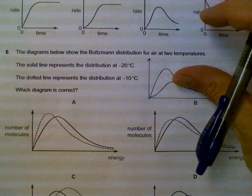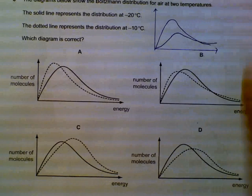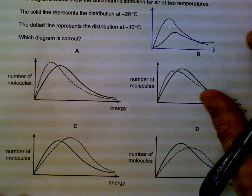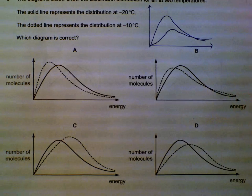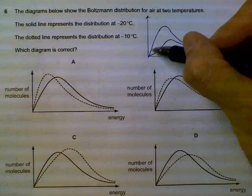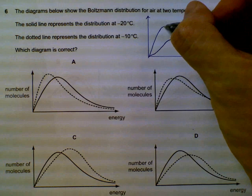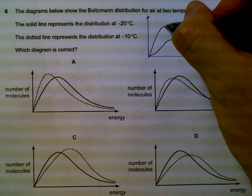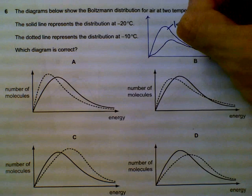We have four options to choose from. Which one represents the minus 20 degrees and minus 10 degrees. Just a general idea. We have two curves. The one that has a higher peak and the peak is located naturally on the left side, that will represent the lower temperature.